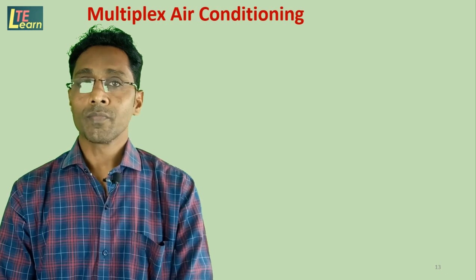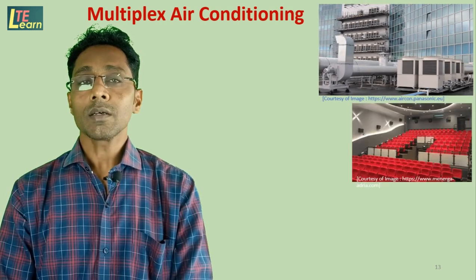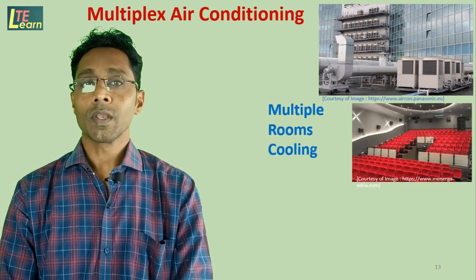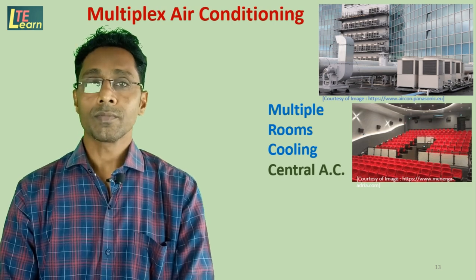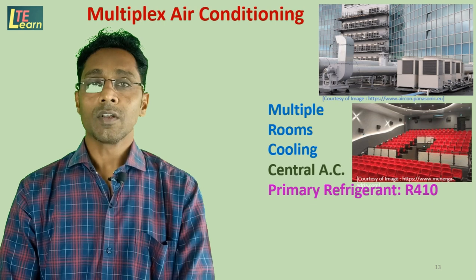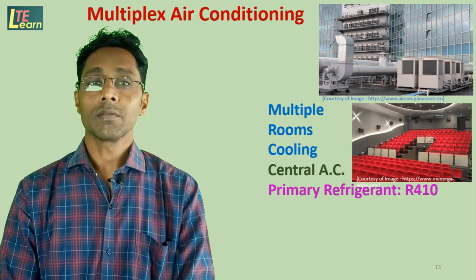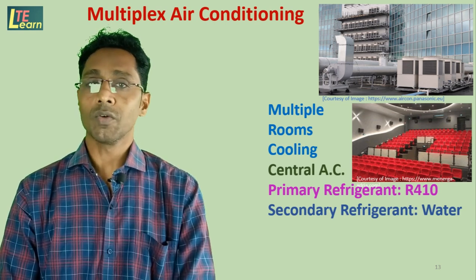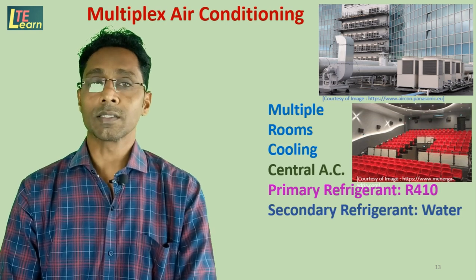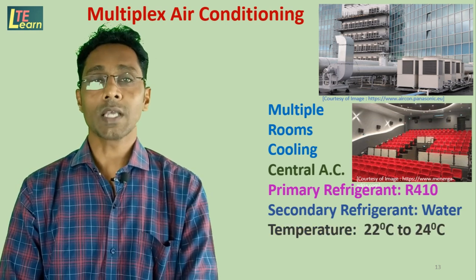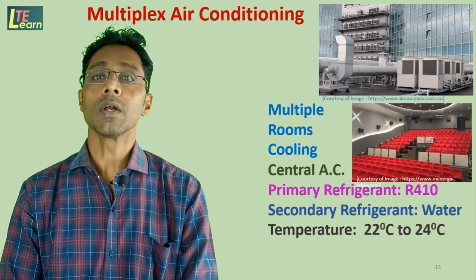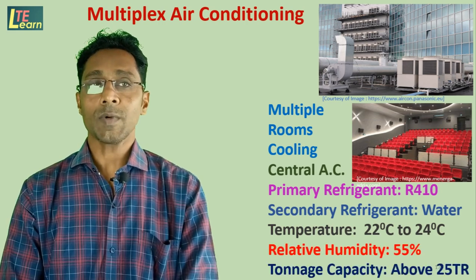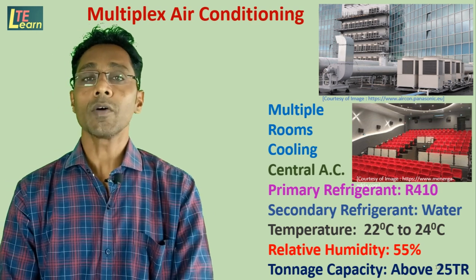Multiplex air conditioning: In a multiplex there are multiple rooms, so central air conditioning is used for cooling. Two refrigerants are used: the primary refrigerant is R410 in a VCRS, and the secondary refrigerant is chilled water at 4 degrees Celsius. Room temperature is maintained in the range of 22 to 24 degrees Celsius with relative humidity of about 55%. Tonnage capacity for multiplex air conditioning is about 25 TR.